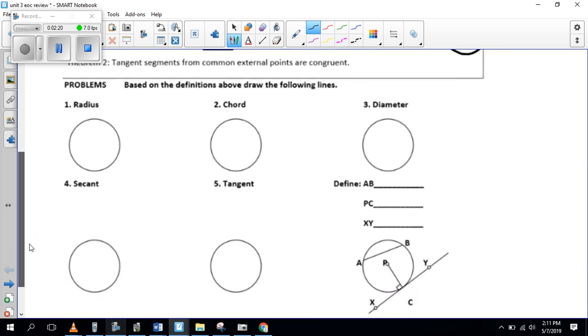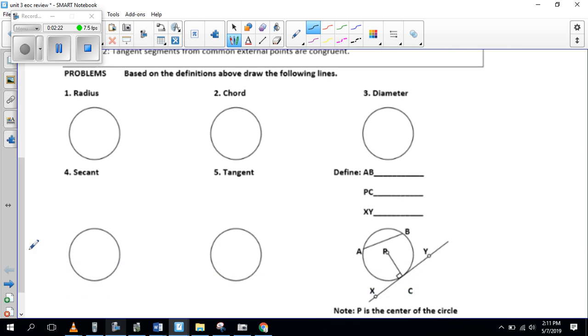Okay, and so this one here is just based off of the definition, draw the following. So we know the radius is like this. The chord, the endpoints are on the circle. The diameter has to go through the center. Sorry, my lines are crooked.